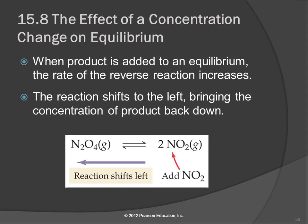Let's look at a couple of specific changes in their effect on equilibrium. Let's look at a concentration change, and this is more related to changing the population in Middle Earth. If we add product to an equilibrium, the rate of the reverse reaction increases.